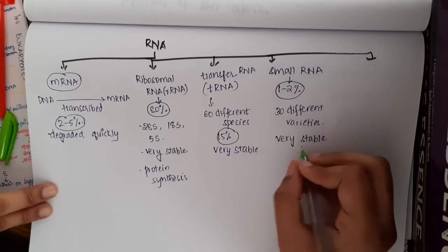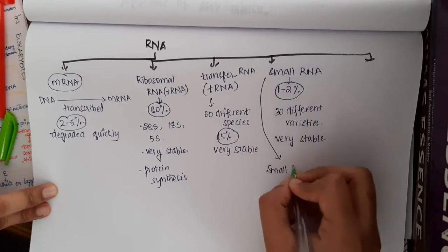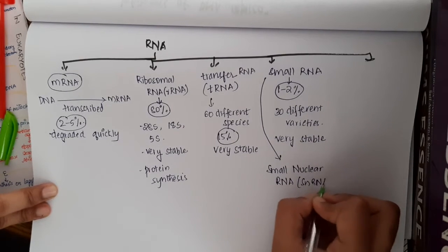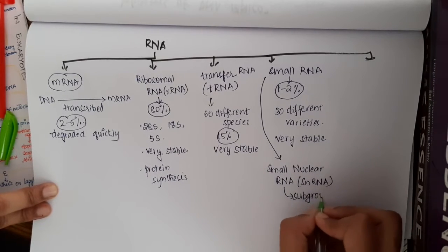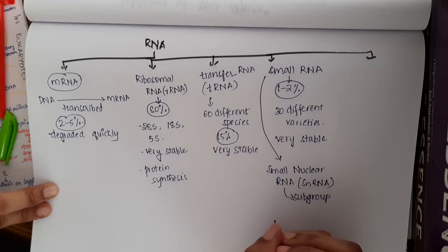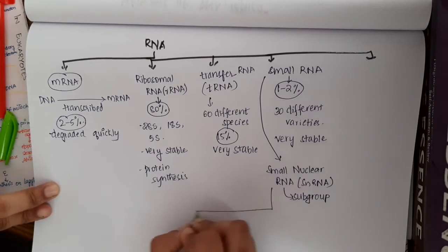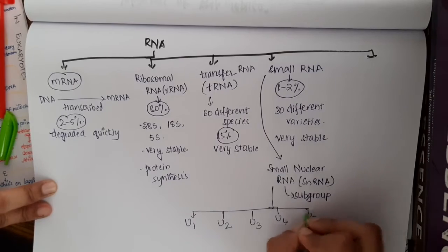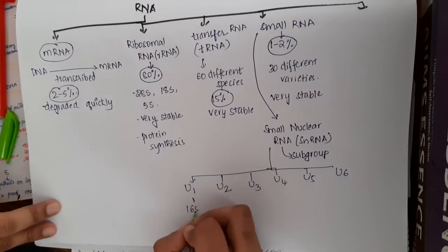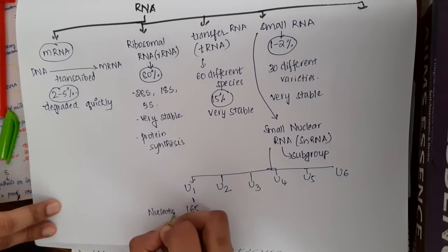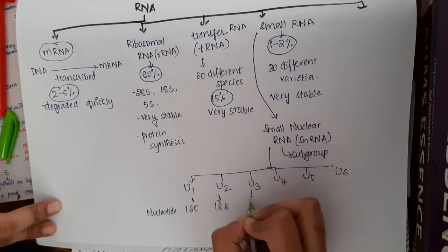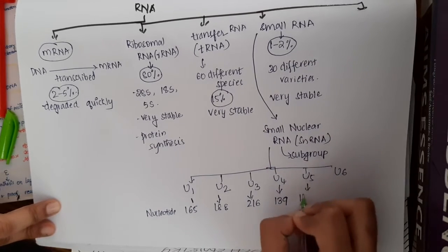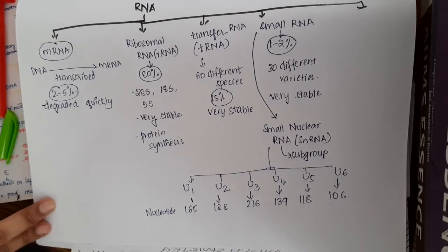Among all these small RNAs, we have one more subgroup called small nuclear RNA. This small nuclear RNA contains the following types: U1, U2, U3, U4, U5, and U6. In U1, you have 165 nucleotides. In U2, we have 188 nucleotides. In U3, we have 260 nucleotides. U4 has 139 nucleotides. In U5, you have 180 nucleotides. In U6, you have 106 nucleotides.